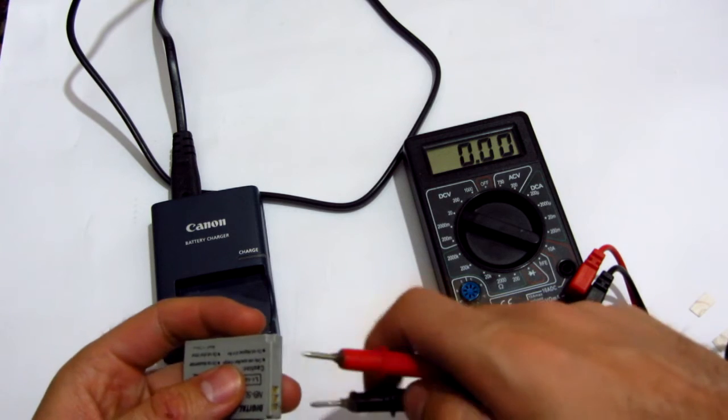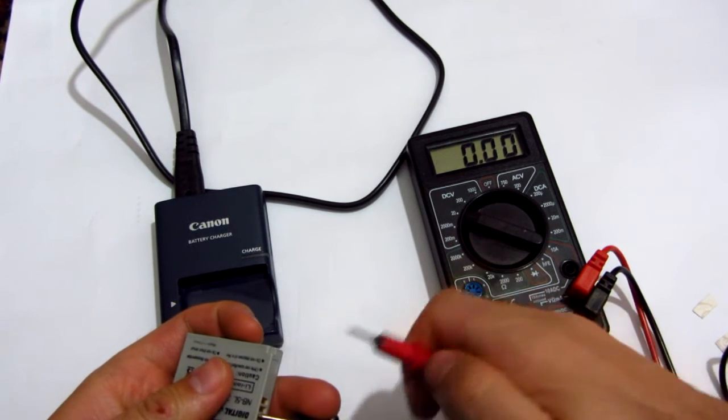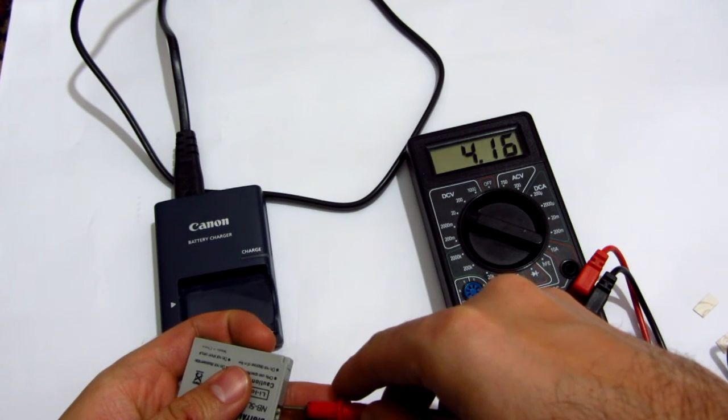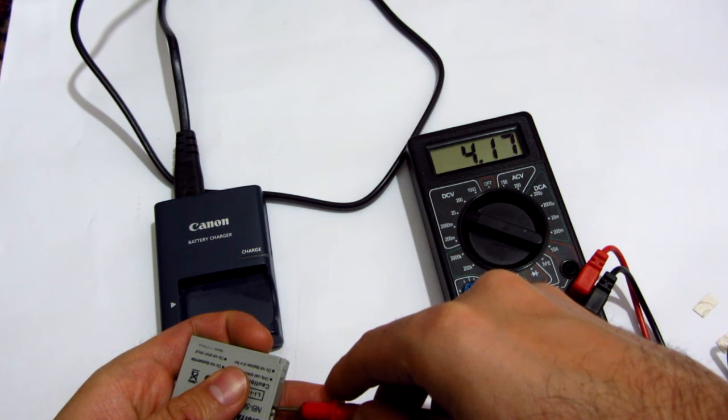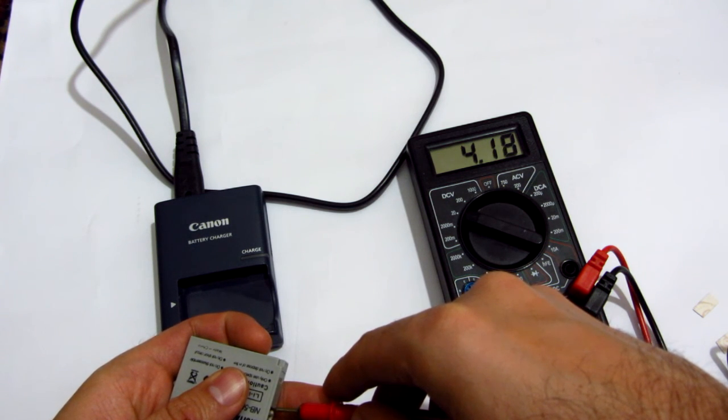Let's measure the voltage on the battery, on the right side of those connectors. 4.1 is the voltage. That's it.